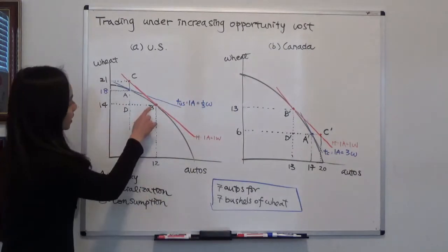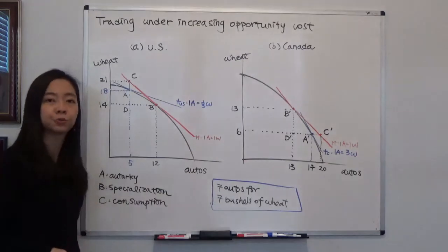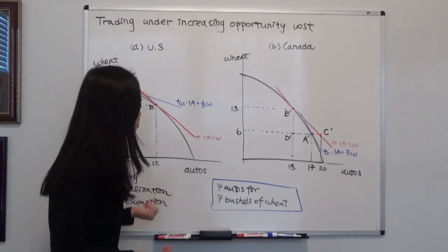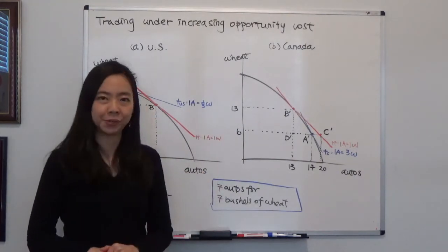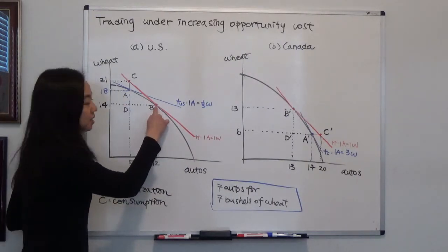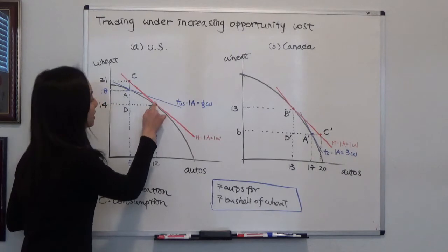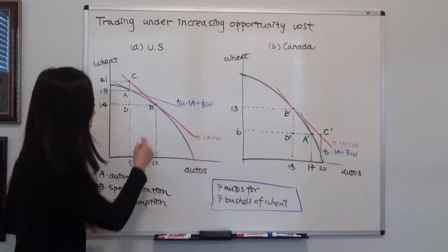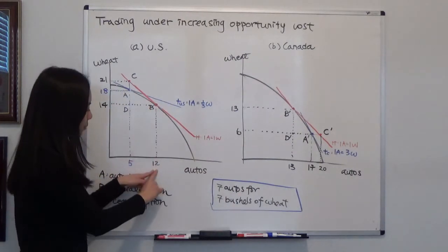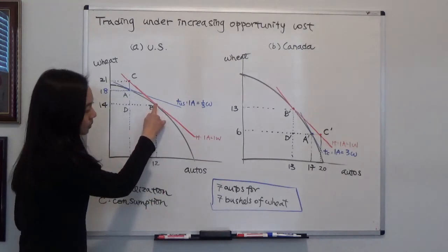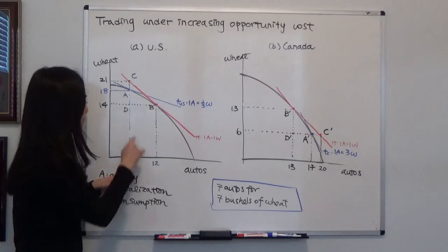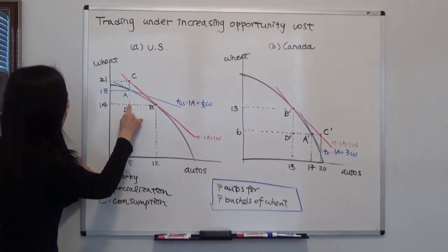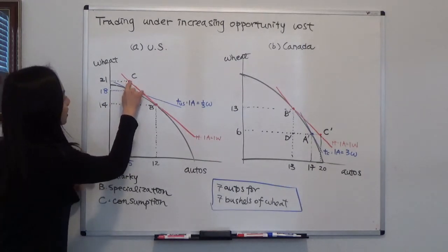We partially specialize at points B and B prime, and now we're going to trade. Suppose the terms of trade is one to one — in particular, we trade seven automobiles for seven bushels of wheat. The US partially specializes in automobiles and exports seven automobiles in exchange for seven bushels of wheat from Canada. Even though we produce 12 automobiles, we export seven to Canada, so we end up with only five automobiles. But we import seven bushels of wheat from Canada, moving from 14 bushels of wheat to 21 bushels of wheat.